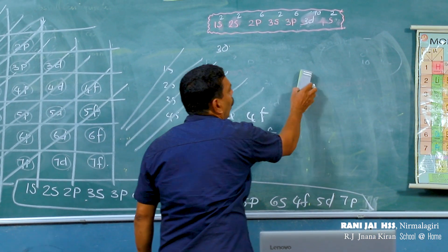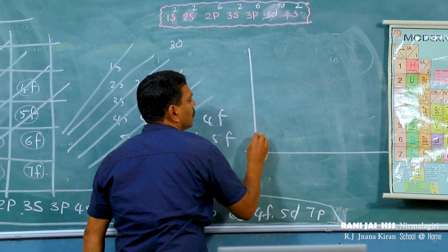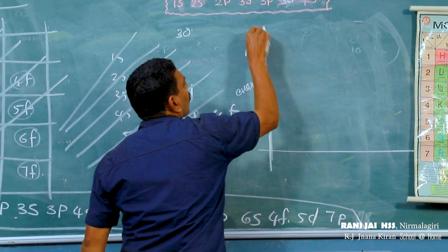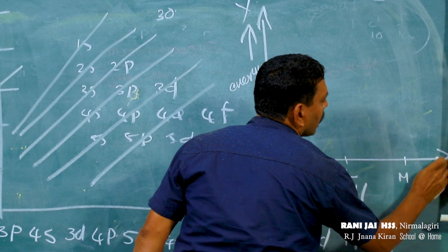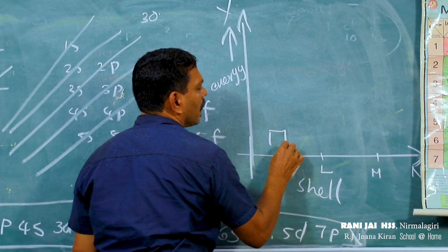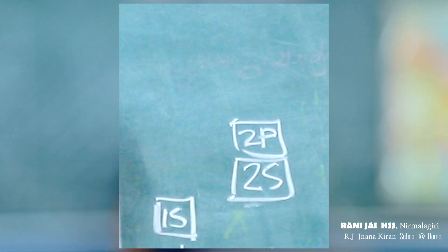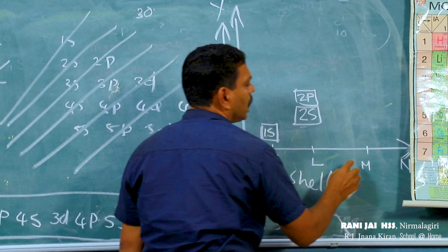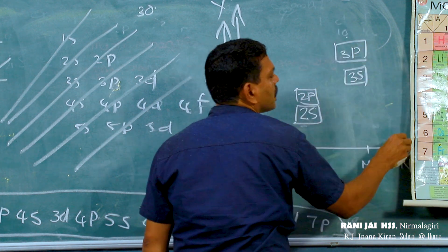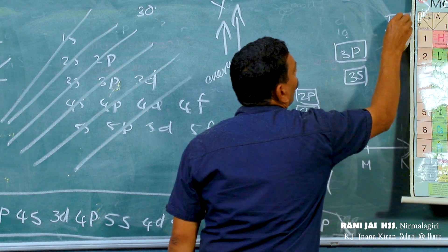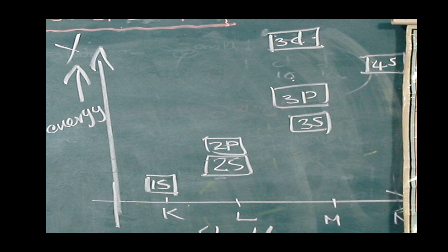Electrons are filled in various subshells in the order of increasing energy. We can represent subshells and their energies on a graph. The y-axis is energy in increasing order, and the x-axis represents the shells: K, L, M, N. In the K shell: 1s. In L: 2s and 2p. In M: 3s, 3p, 3d. In N: 4s, 4p. Notice that 4s has lower energy than 3d — so 4s is filled before 3d. This is the graphical representation of the energy of various subshells.